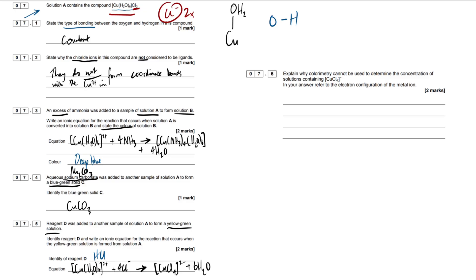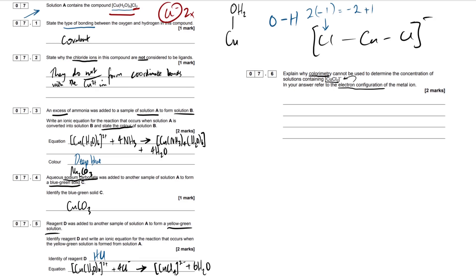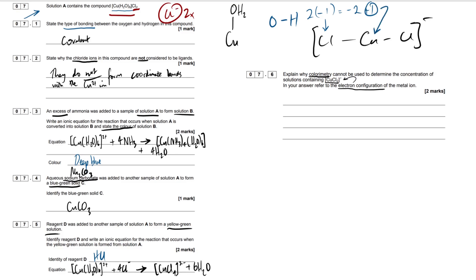Next question then, the last question here. Explain why colorimetry cannot be used to determine the concentration of solutions containing CuCl2- complex. In your answer, refer to the electron configuration of the metal ion. So they're giving you the marks right here. They're telling you how to think about this question, which is quite useful actually. So electron configuration of the metal ion. Our metal ion here, if we've got Cu, we've got our Cls, and we've got an overall charge of minus one. So what is the oxidation state of a chloride ion? Halide therefore, is simply minus one. So if we've got two lots of minus one, that's going to equal minus two. Therefore, since our overall charge is minus one, how do we get to minus one? We just plus one. Which means that our oxidation state of our central transition metal ion is plus one.